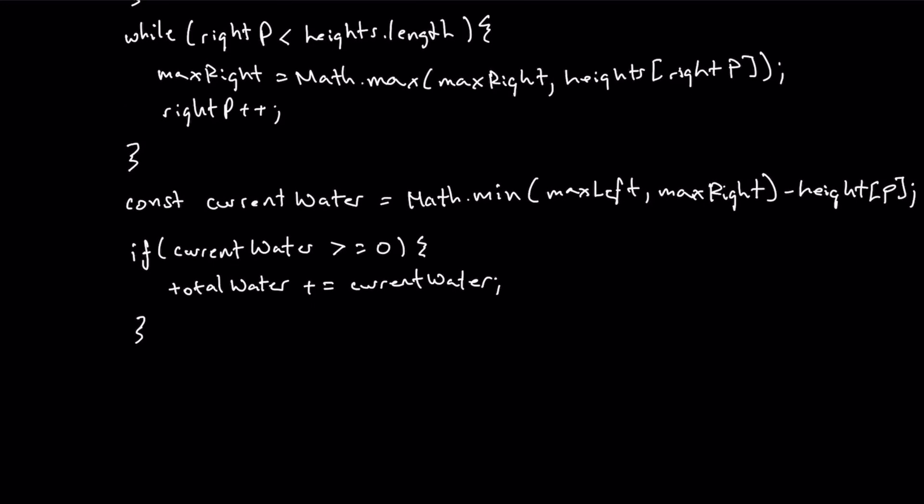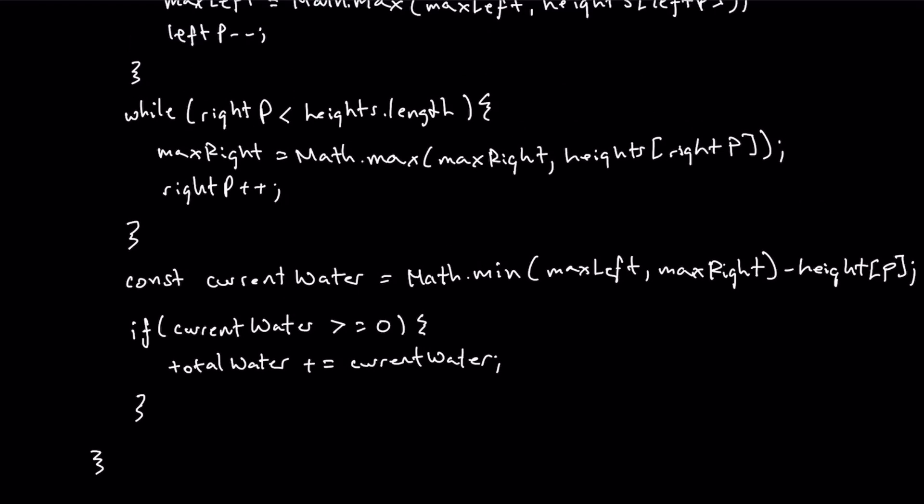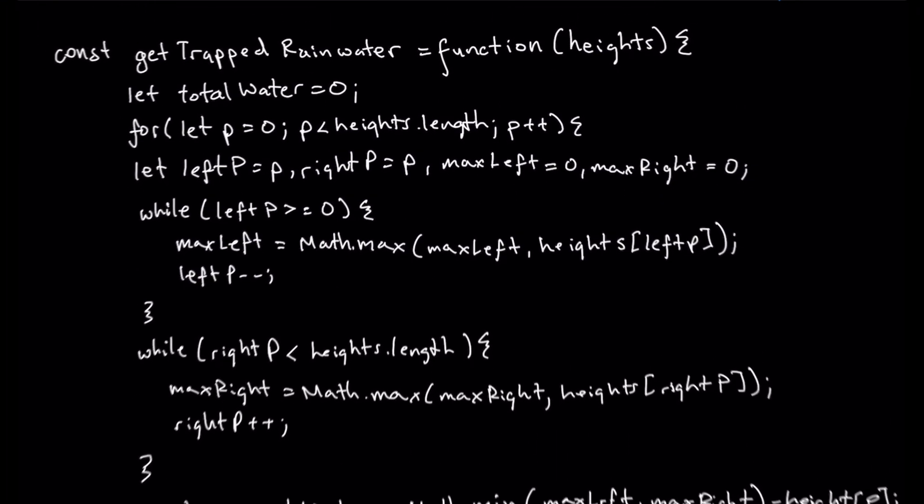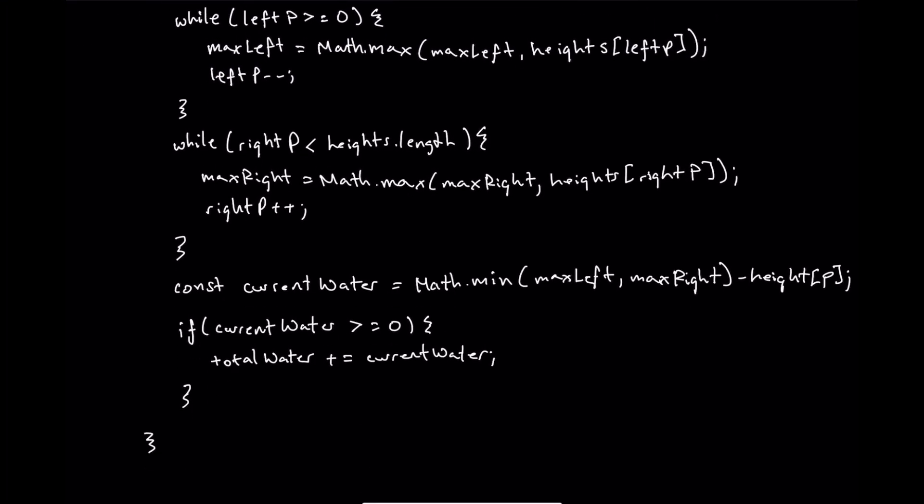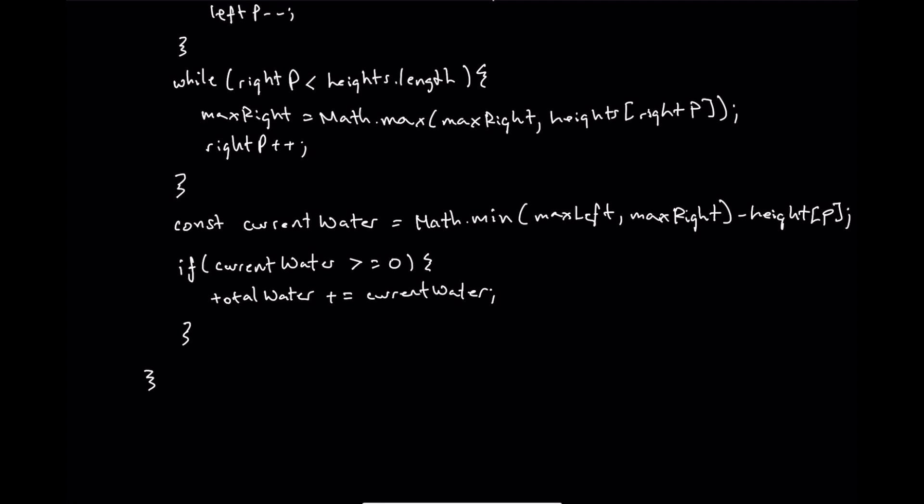And then with that we just now need to close our code because we've done everything. We've gotten the current water. We've decided whether or not to add it to total water. There's nothing else we need to do with our current P value. So then we close off our for loop right here. And then what we're going to do is now we're going to return total water, close off our function and that's it.